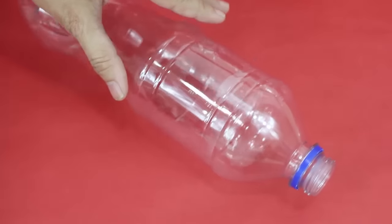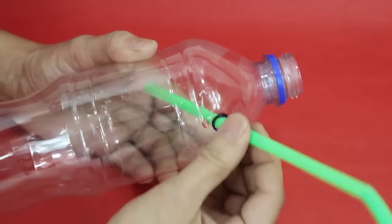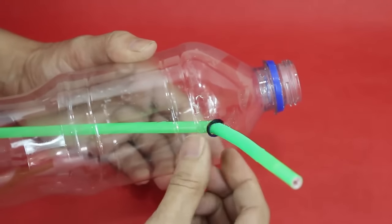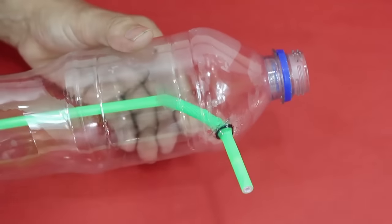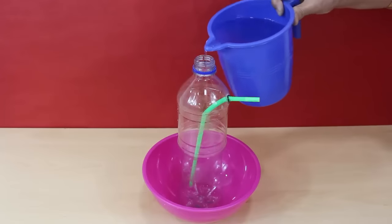Make a hole near the mouth of the plastic bottle with scissors. Insert a straw in the bottle and secure the hole with glue. Fill the bottle with water.